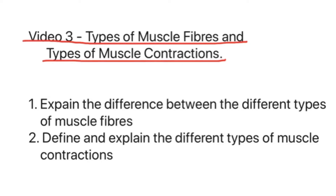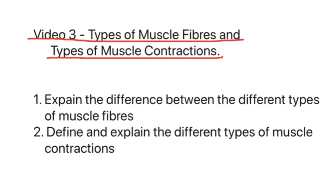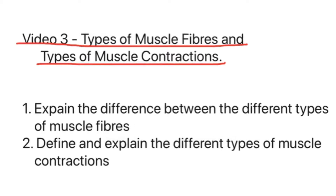Hello everyone and welcome to video 3 in the anatomy and physiology series of the OCR PE A level. This video is going to be looking at the types of muscle fibres and the types of muscular contractions. Two things you should be able to do by the end of this video: firstly, explain the difference between the different types of muscle fibres, and secondly, define and explain the different types of muscular contractions.